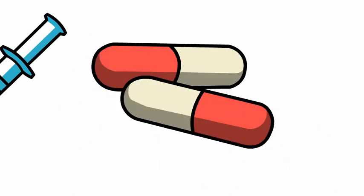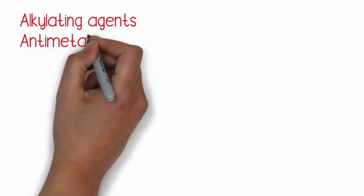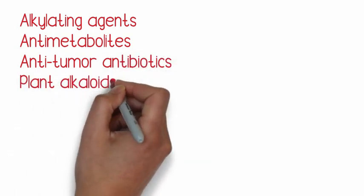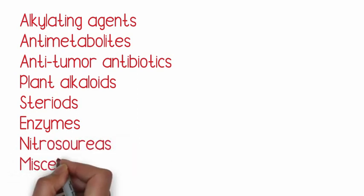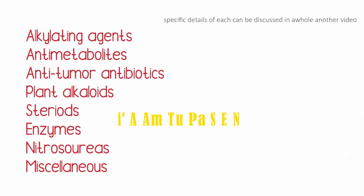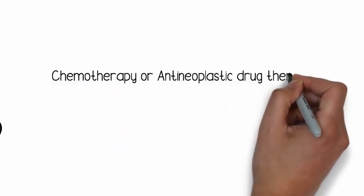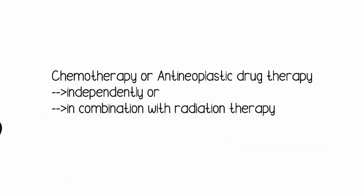Pharmacologically speaking, these drugs can be briefly classified as alkylating agents, anti-metabolites, anti-tumor antibiotics, plant alkaloids, steroids, enzymes, nitrosoureas, and miscellaneous others. I remember these with the help of a mnemonic. They are either cell cycle dependent or cell cycle independent.